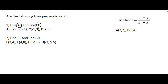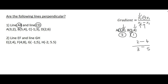Let's look at line AB first. Using the gradient formula, I'll call point A number 2 and point B number 1 — that's just my choice; you can choose the other way and still get the same answer. So we take the y value of point 2, which is 2, minus the y value of point 1, which is 4, over the x value of point 2, which is 3, minus the x value of point 1, which is 5. The gradient of AB is 1.